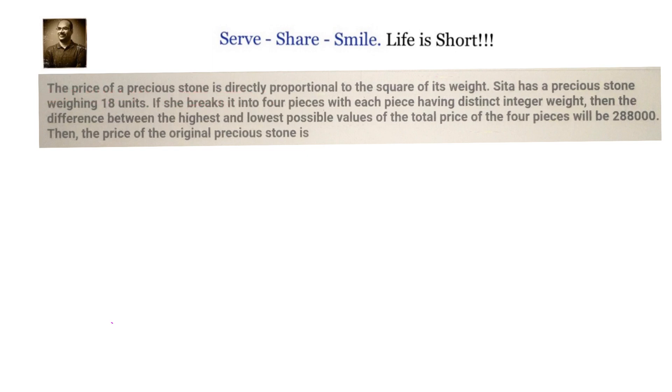The price of a precious stone is directly proportional to the square of its weight. Sita has a precious stone weighing 18 units. If she breaks it into 4 pieces, with each piece having distinct integer weight, then the difference between the highest and the lowest possible values of the total price of the 4 pieces will be 2,88,000. Then price of the original precious stone is how much?